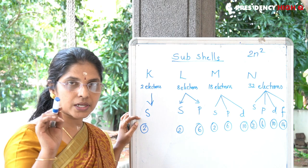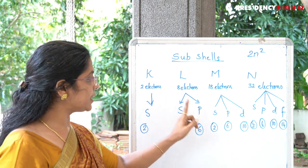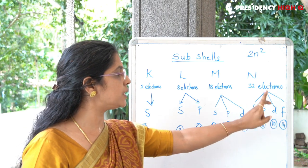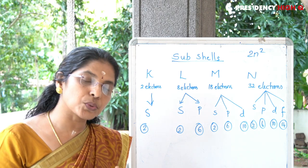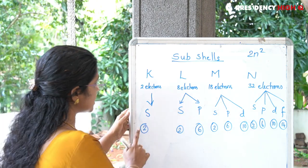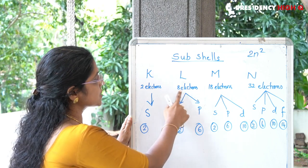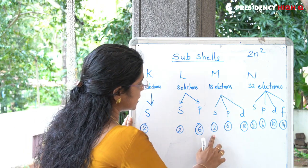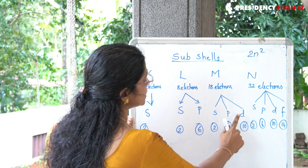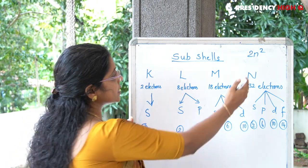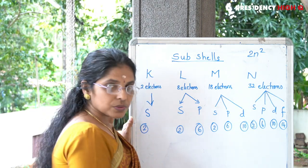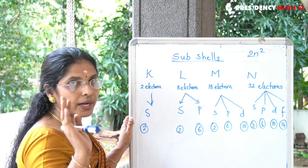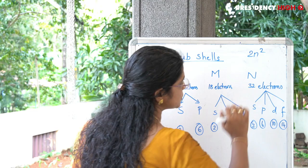The K shell has only the s sub-shell. The L shell has s and p sub-shells. The M shell has s, p, and d sub-shells. The N shell has s, p, d, and f sub-shells. The s sub-shell holds 2 electrons, p holds 6, d holds 10, and f holds 14 electrons. So: s=2, p=6, d=10, f=14, giving totals of 2, 8, 18, and 32 electrons per shell.